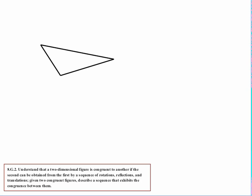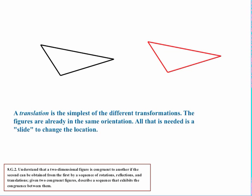Triangles and congruence are going to be something that students do a lot with, so let's start with a triangle. The wonders of technology enable us to take a figure and create a carbon copy, so we already know they're congruent. A translation is the simplest of the different transformations. The figures are already in the same orientation, so all that's needed is a slide to change the location from one over to the other, and everything matches up.